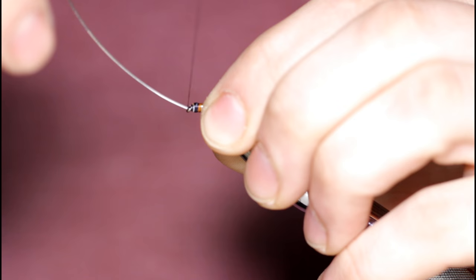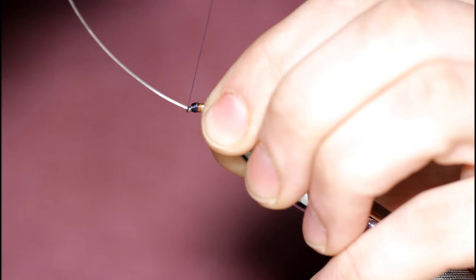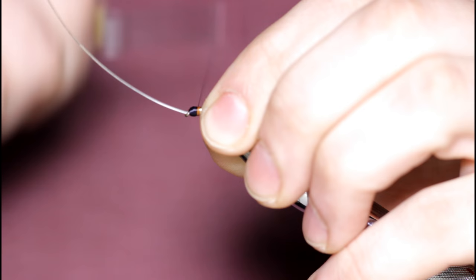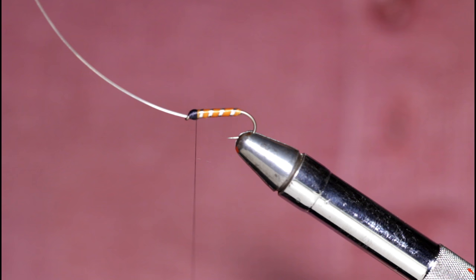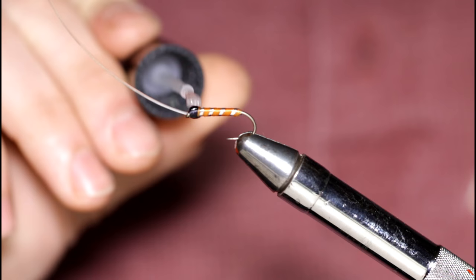Watch the thread slipping down into the monofilament like it does sometimes. And once you are satisfied with that, come in and whip finish or throw multiple half hitches in. Now is a good time to hit this head with some cement. And take the hook out of the vise.